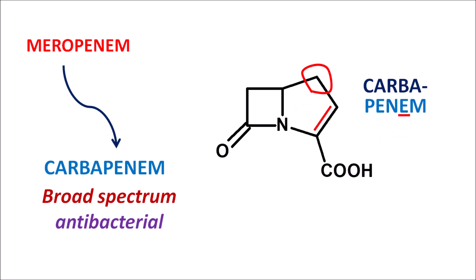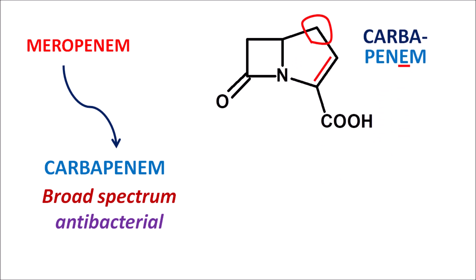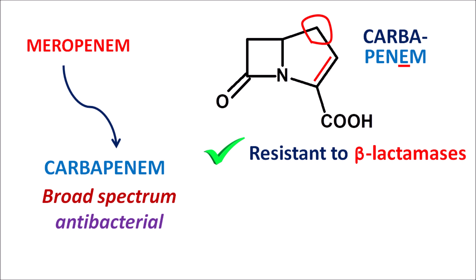This structural modification to the penem ring system makes meropenem and other carbapenems more resistant to degradation. Meropenem is resistant to beta-lactamases, which increases the antibacterial activity of this drug. However, it can be metabolized by other types of bacterial enzymes, and resistance may develop through enzymatic activity or drug efflux from the bacterial membrane. Even with these limitations, meropenem is still more stable and resistant compared with penicillins.